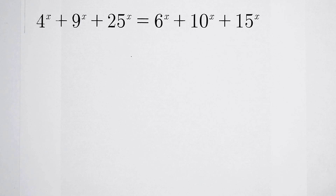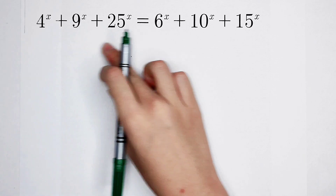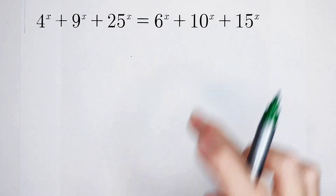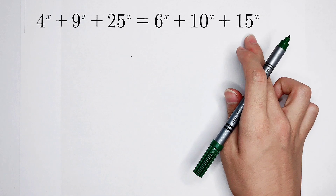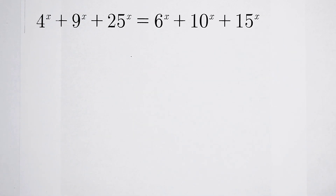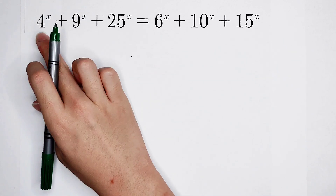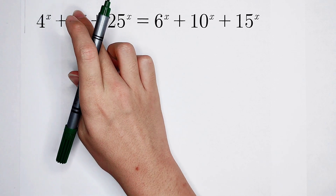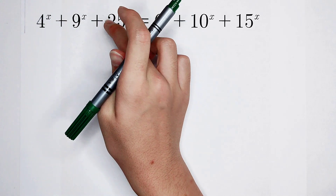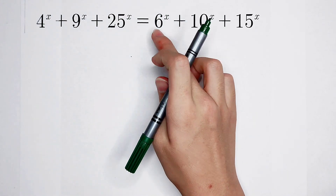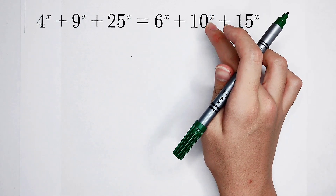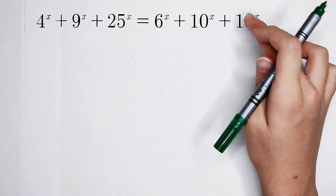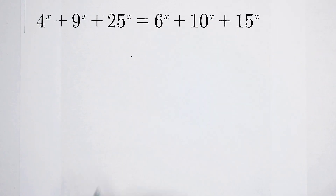I'm going to remind you that you have to pay attention. Look — have you noticed the exponents? Very wonderful. 4 is 2 squared, 9 is 3 squared, 25 is 5 squared, and 6 is 2 times 3, 10 is 2 times 5, and 15 is 3 times 5.